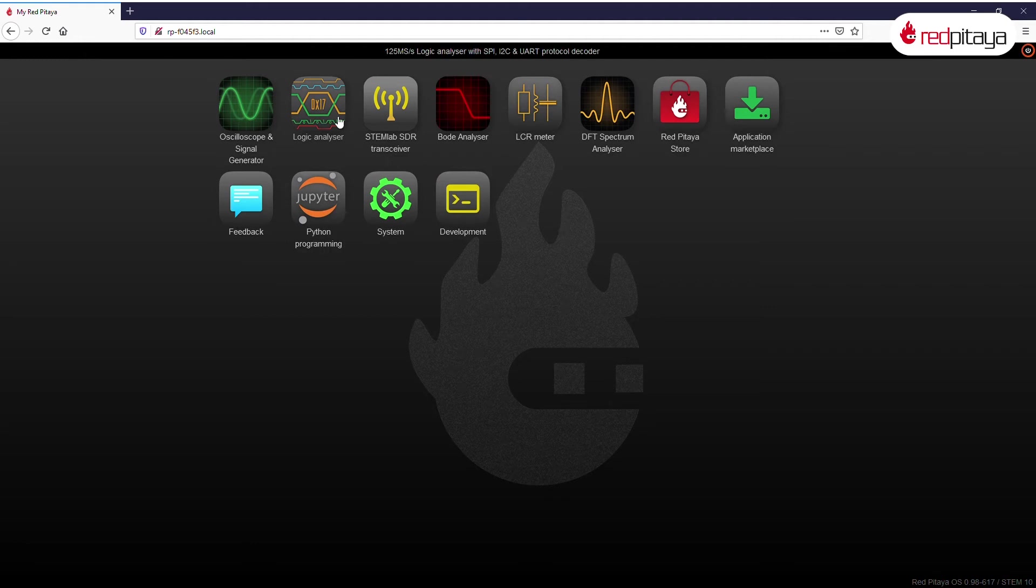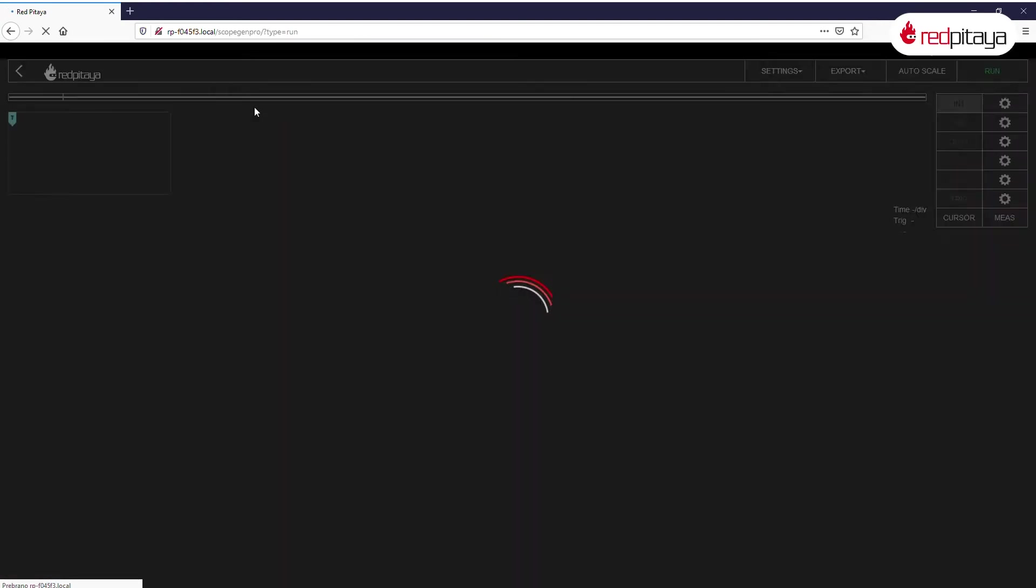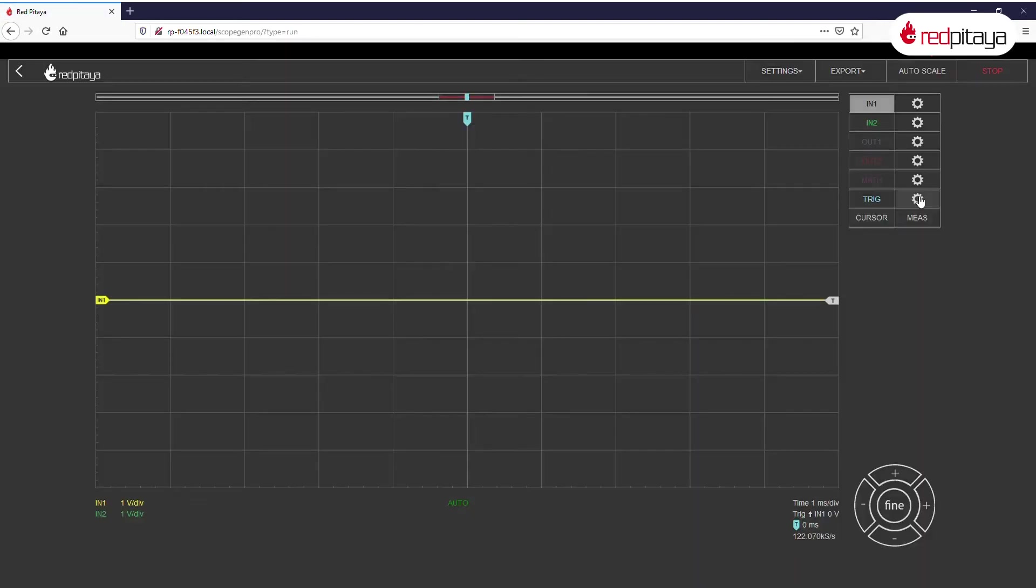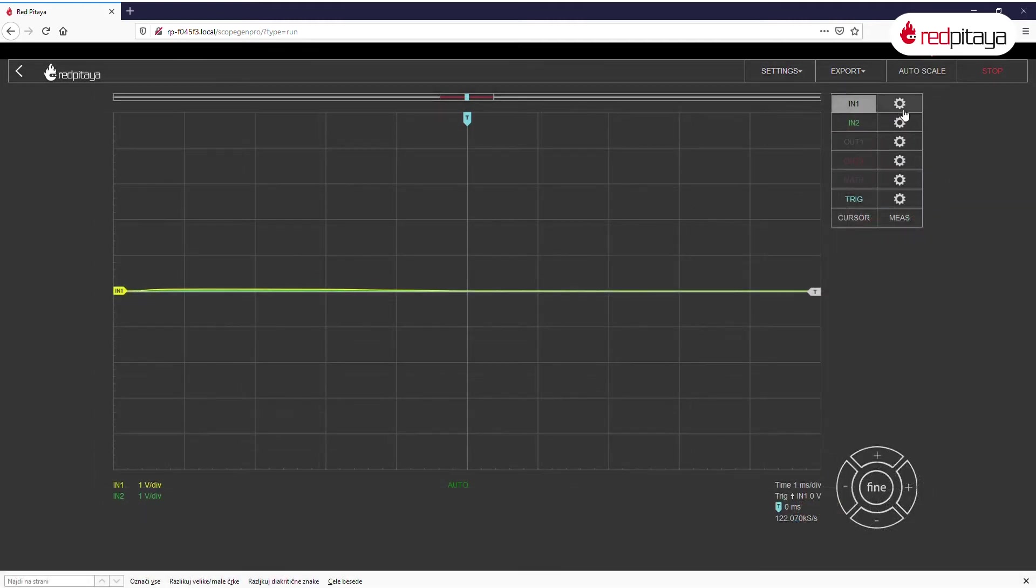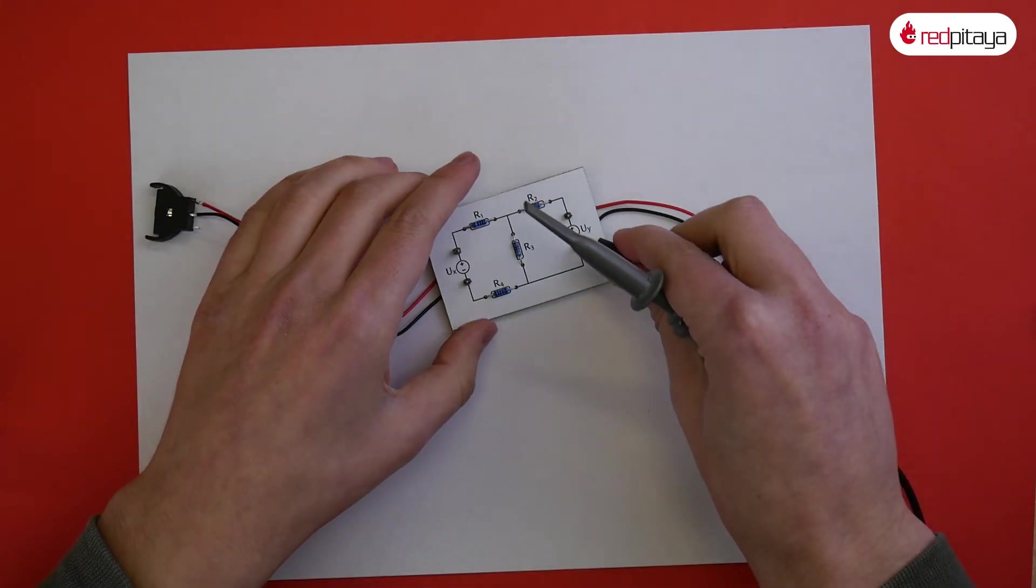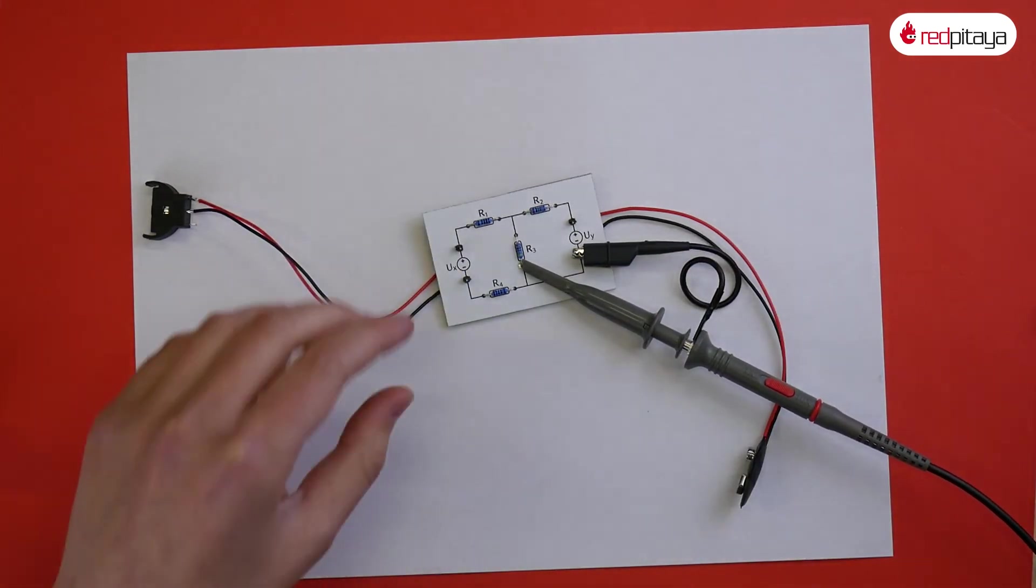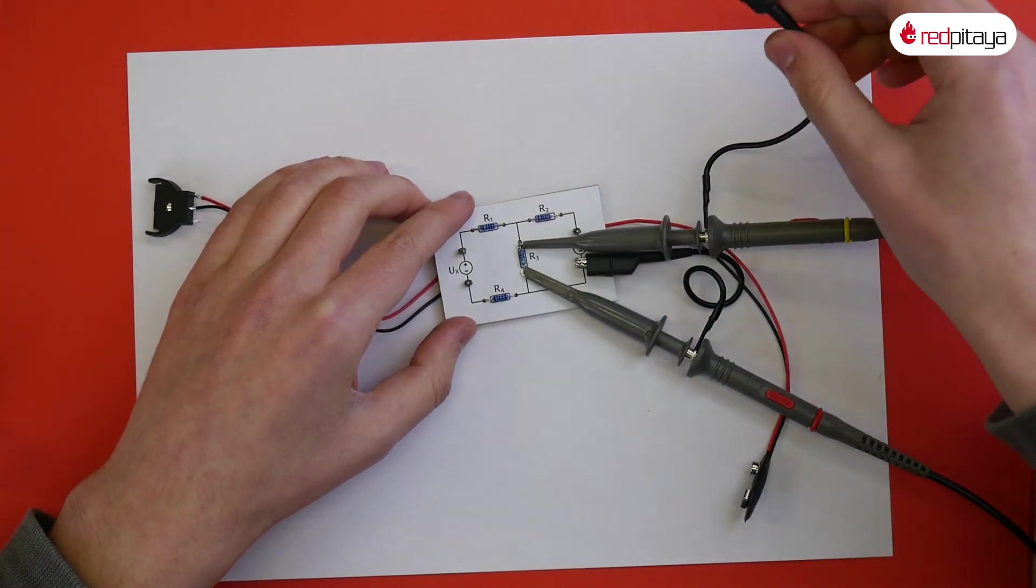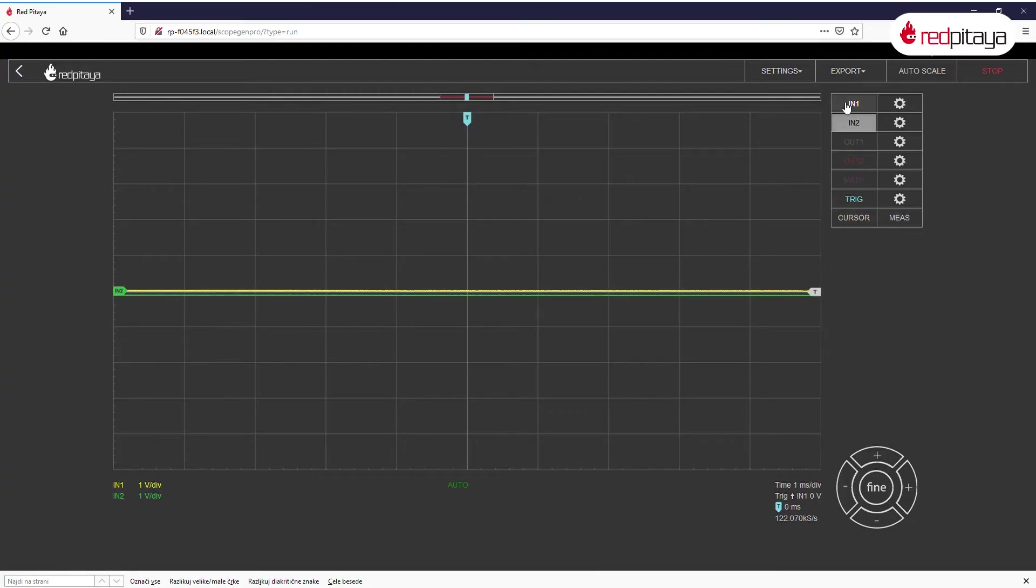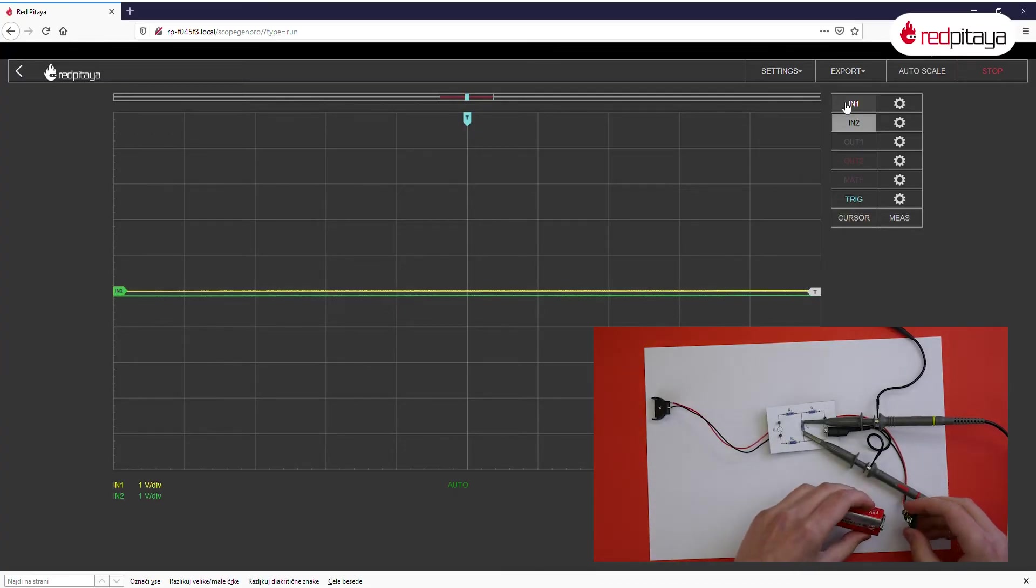Once in main menu, click the Oscilloscope app. Now we will configure it. Set the probes 1 and 2 so that they have 1 to 10 attenuation ratio, both in software and in hardware. Now connect the alligator clip of one probe to any resistor on the circuit and put the other one to the other node. There is no need to connect the second alligator clip. Now it's time to connect the batteries.